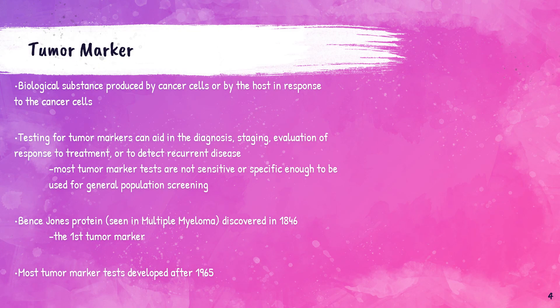A tumor marker is anything present in or produced by cancer cells or other cells of the body in response to cancer or certain benign conditions that provides information about a cancer — such as how aggressive it is, what kind of treatment it may respond to, or whether it is responding to treatment. We test various tumor markers in the clinical chemistry department of the laboratory. These markers are not sensitive or specific enough to be used for general population screening, so they are only tested when a physician suspects there is an issue.